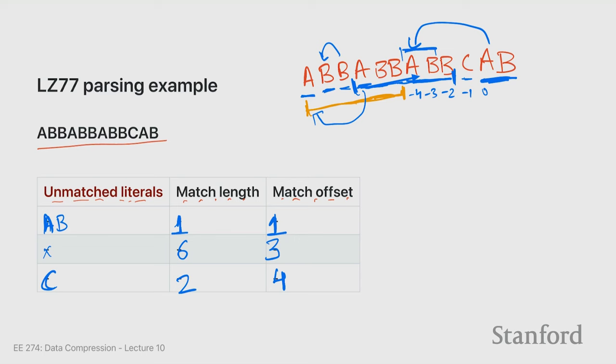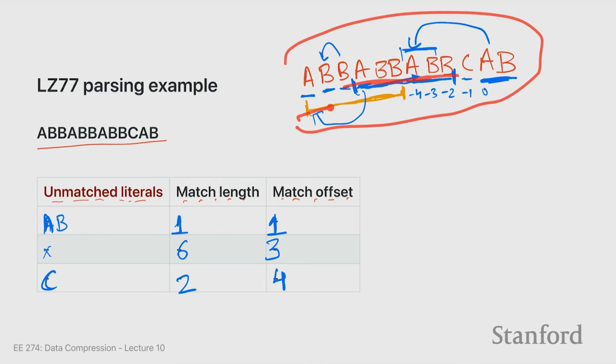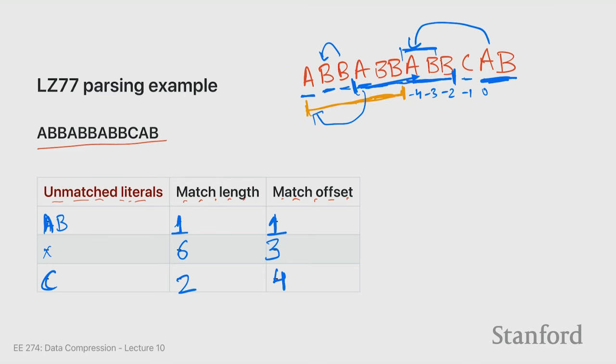Trust me on the overlapping match thing — we will do a decoding soon. That's LZ77. That's how you parse a sequence into these three streams: unmatched literals, match length, and match offset. Any questions?